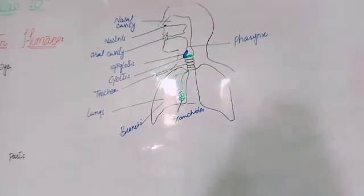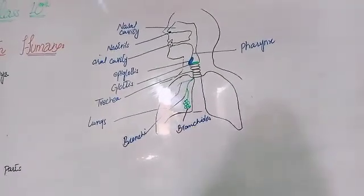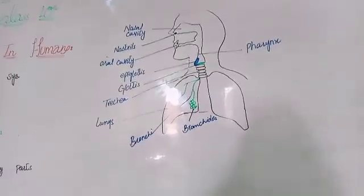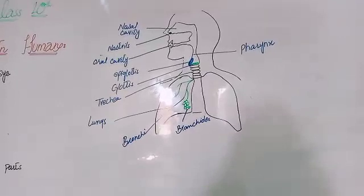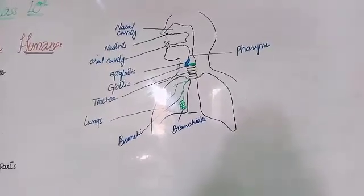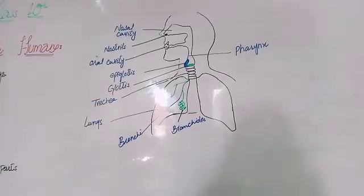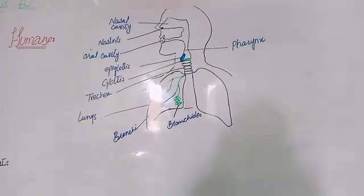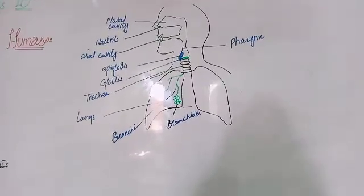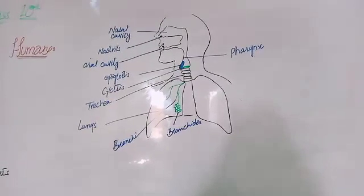If we look at the composition, these structures like the nose and the larynx are made up of cartilage bone. The larynx is also made up of cartilage bone.